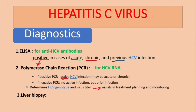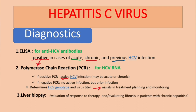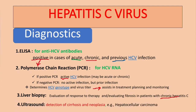Another test is liver biopsy, which is invasive and has disadvantages. It is mainly used for evaluation of response to therapy and for evaluating fibrosis in patients with chronic hepatitis C infection. The last test is ultrasound, which can detect cirrhosis and neoplasia — for example, hepatocellular carcinoma, which is a complication of Hepatitis C virus.